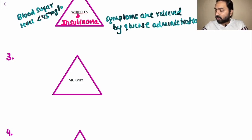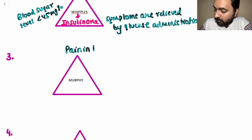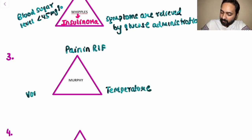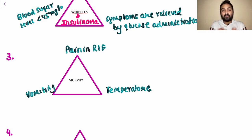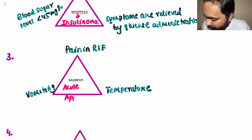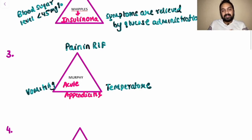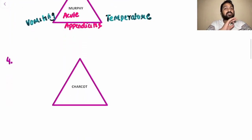The next triad is Murphy's Triad. The components are: pain in the right iliac fossa, fever, and vomiting. With this clinical scenario, you can think of acute appendicitis — Murphy's Triad is seen in acute appendicitis.